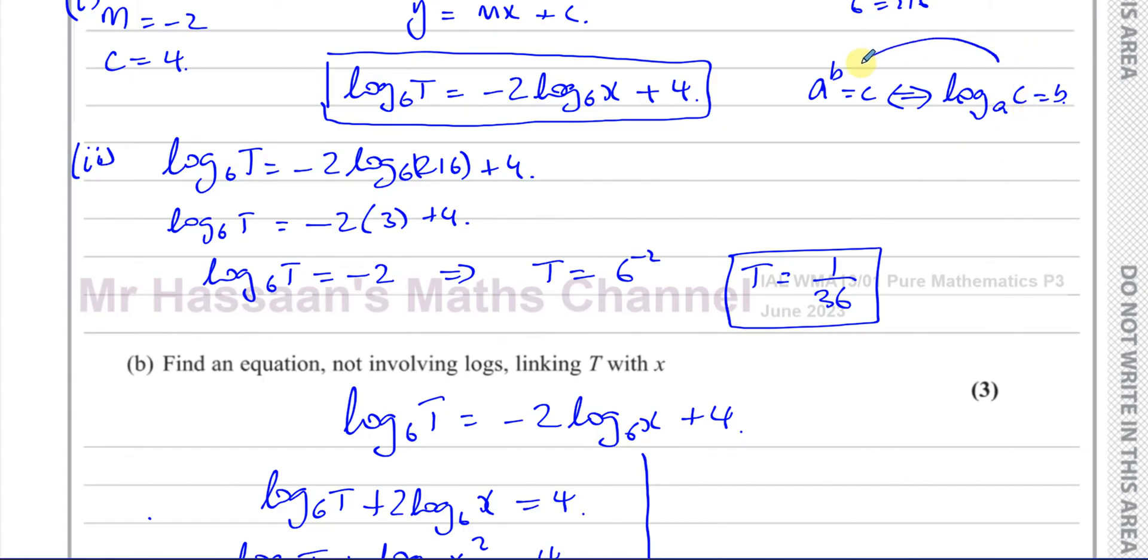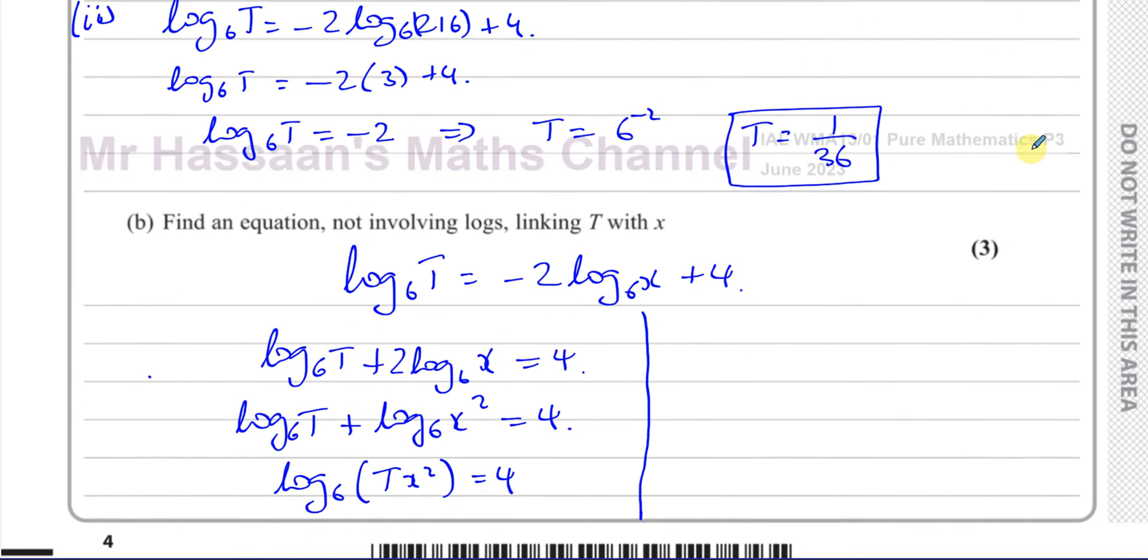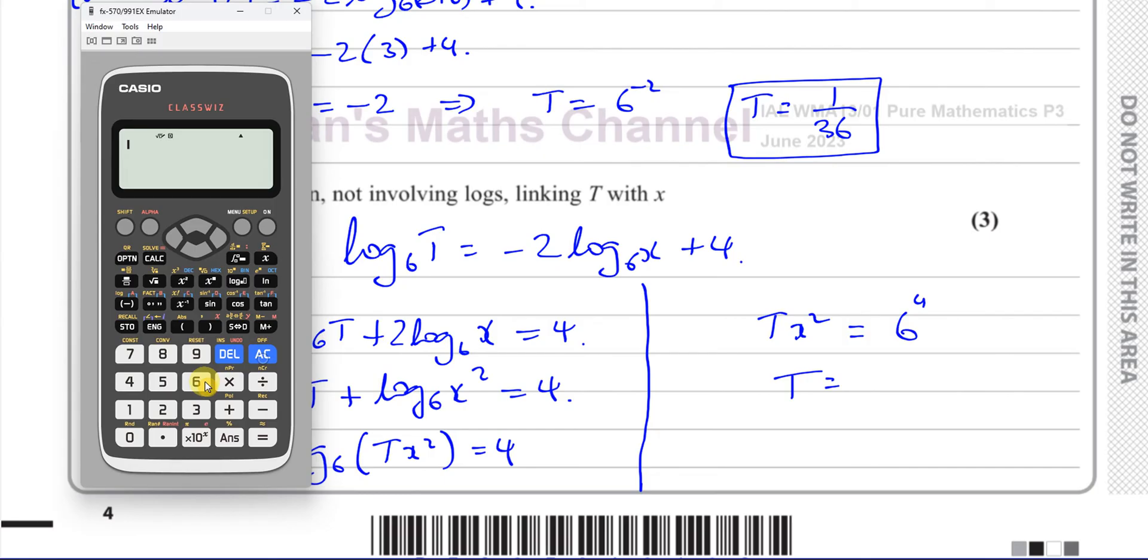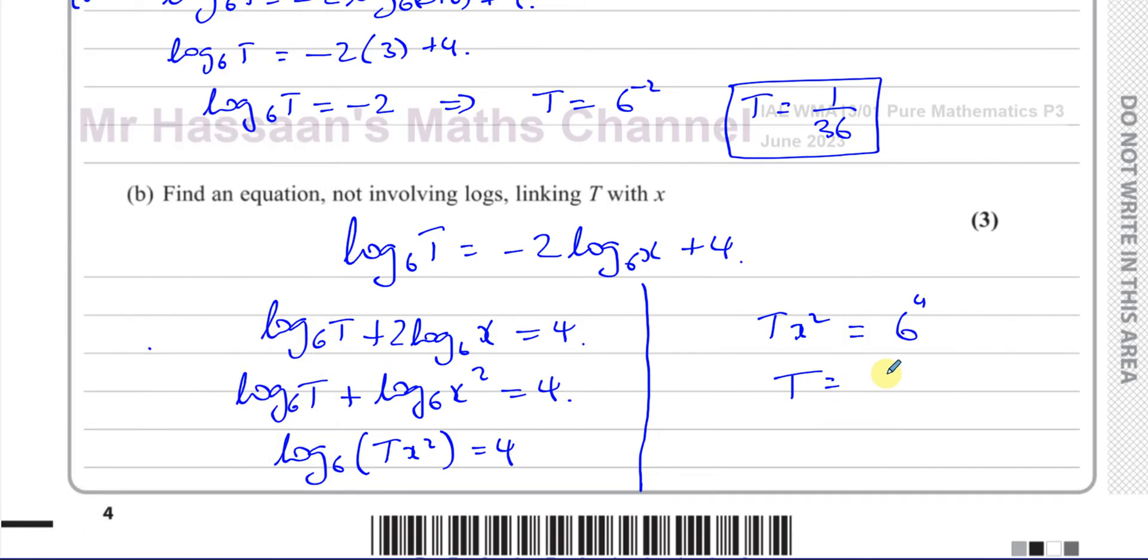So now I can use that same concept. I'm going to change from log form to index form. I know that the base is 6. So I can say that 6 to the power 4 equals TX squared. So it says linking T with X, we can say T equals 6 to the power 4 over X squared. If we do 6 to the power 4, that gives us 1296 over X squared. That's the equation linking T with X.